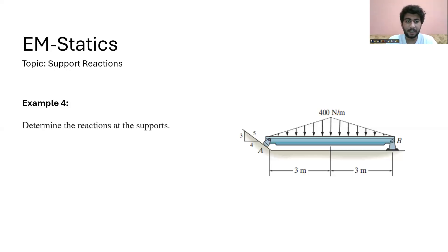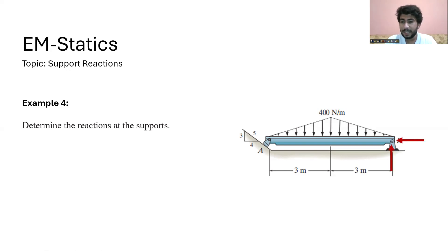In this program, we have to find reactions at the supports. We have two supports: one at point A and the other at point B. At point B, we have two reaction forces because it is a fixed joint. At point A, we have only one reaction force because it is a roller joint.